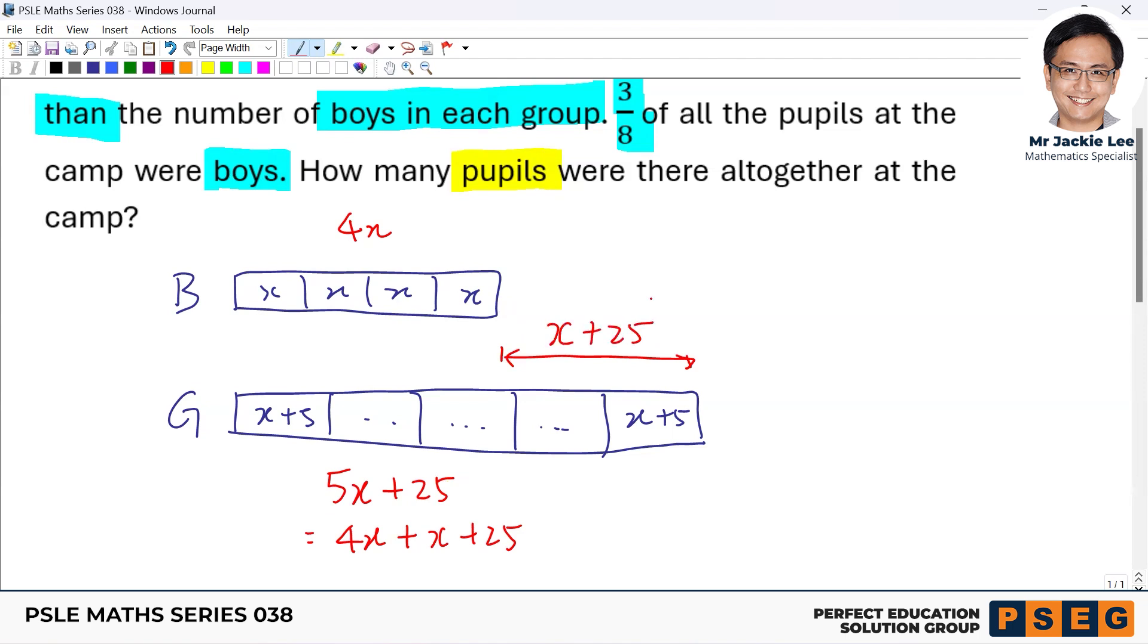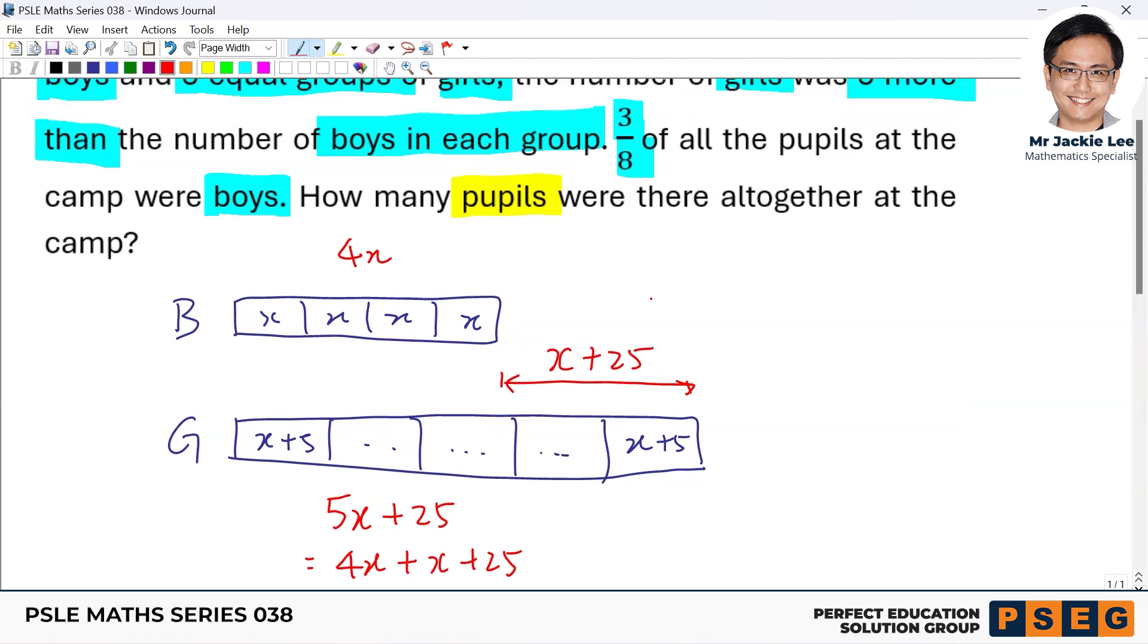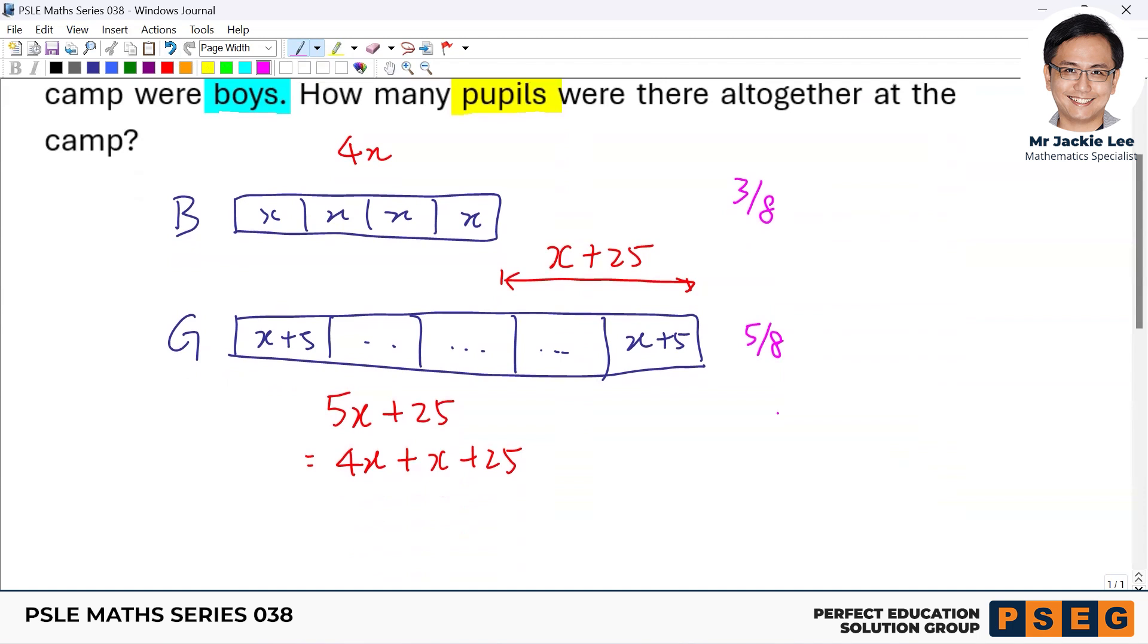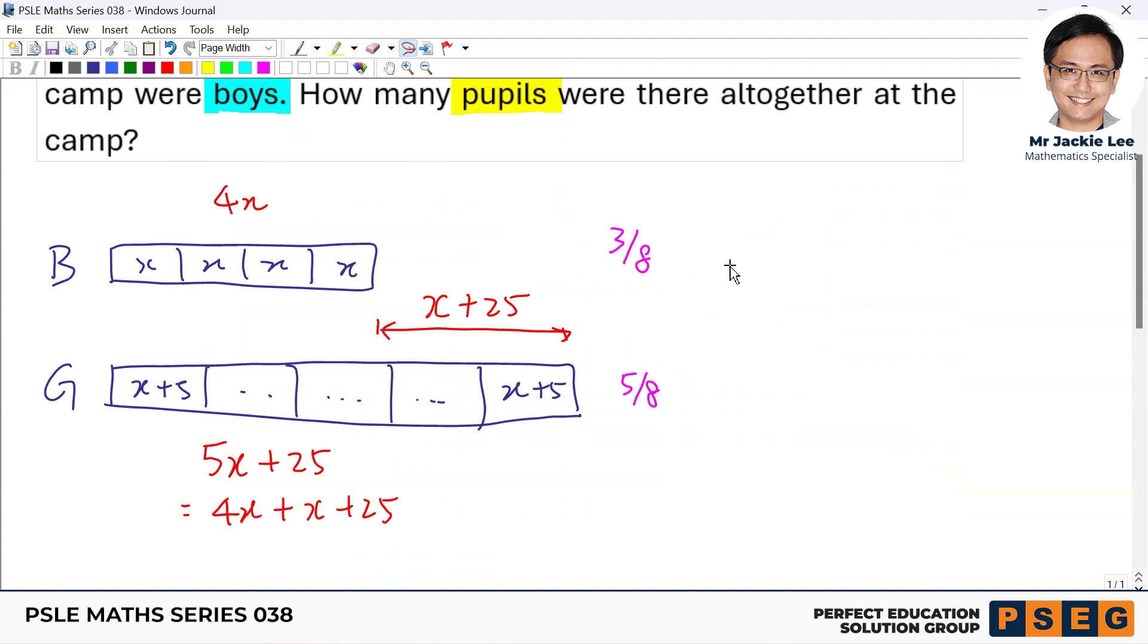Now, overall for the boys occupy three over eight. So in fact, this is 3/8. Overall, then this is obviously 5/8. So you will find the difference between overall the girls and the boys. The difference is actually the X plus 25. Then this one corresponding to, in terms of fraction, would be 5/8, the girls, minus the boys 3/8. Now, this one should be 2/8 and end up 1/4. One over four.